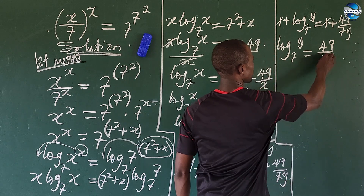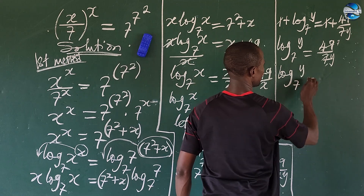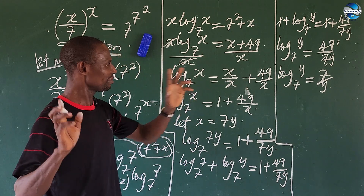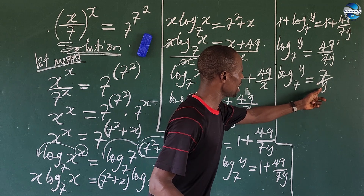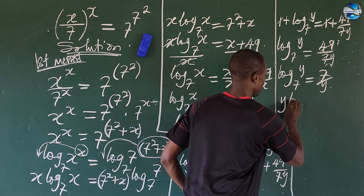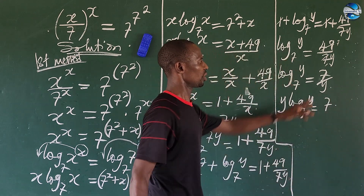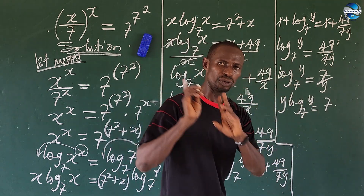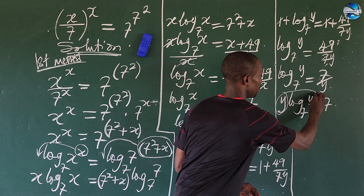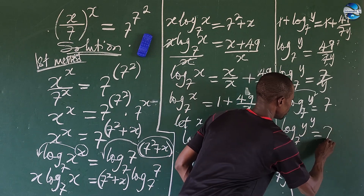So 7 goes into 49 to give us 7. So we're going to come up with log y base 7 equal to 7 over y. For us to eliminate this y, we multiply both sides by y. This gives us y times log y base 7 equal to 7. According to the law of logarithm, we can move this y here as an exponent, so this gives us log y to the power of y base 7 equal to 7.